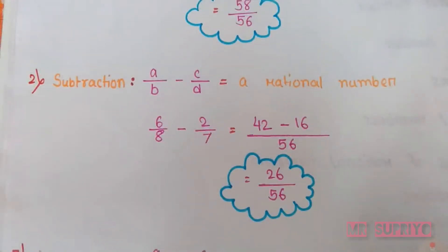Now the second part under closure is subtraction. Addition we have seen; now for subtraction, you can see here: a/b minus c/d is equal to a rational number. The same thing is being said here — if we subtract one rational number from another rational number, the answer that comes will also be a rational number.